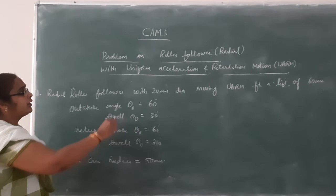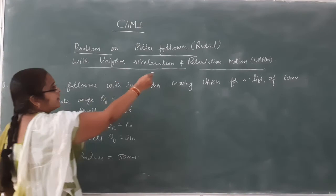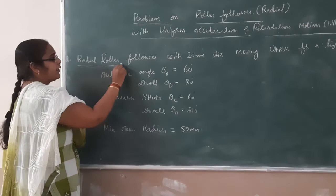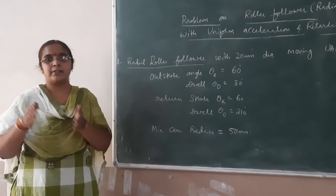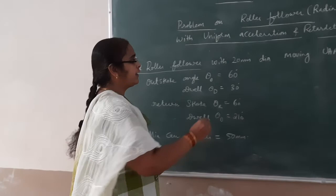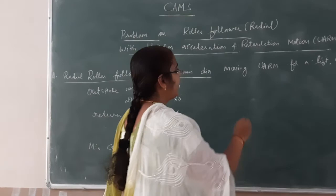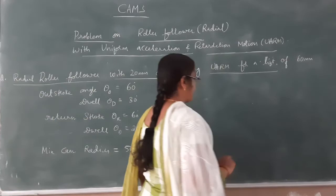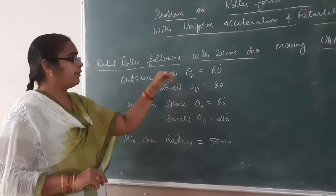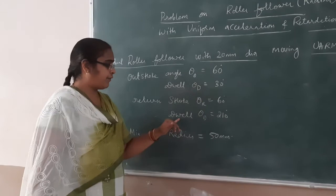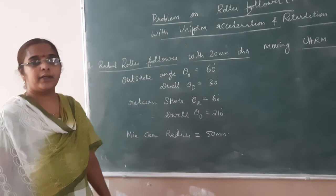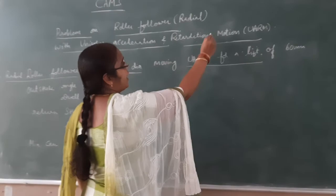Today I am going to show the problem of a roller follower which is radial, moving with uniform acceleration and retardation motion. It is a radial roller follower — the follower axis coincides with the cam axis. It is moving with a 20 mm diameter, with uniform acceleration and retardation motion for a lift of 60 mm. The outstroke angle is 60 degrees, followed by a dwell of 30 degrees, return stroke of 60 degrees, and another dwell of 30 degrees. Minimum radius of cam is 50 mm.